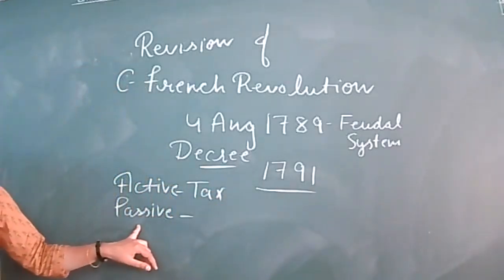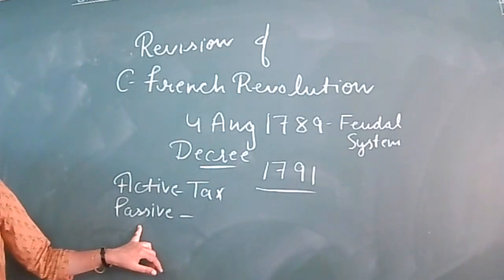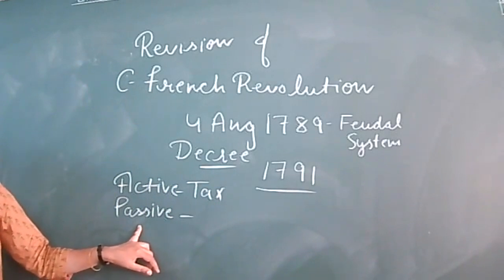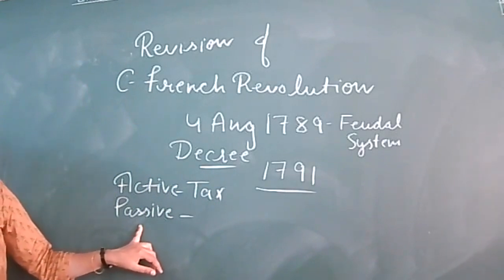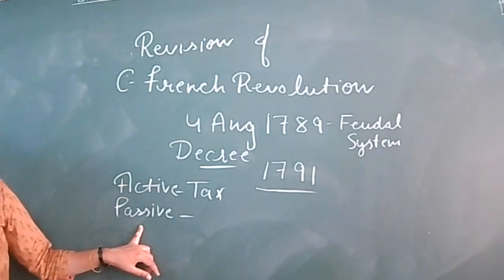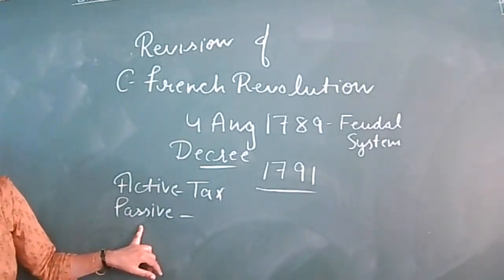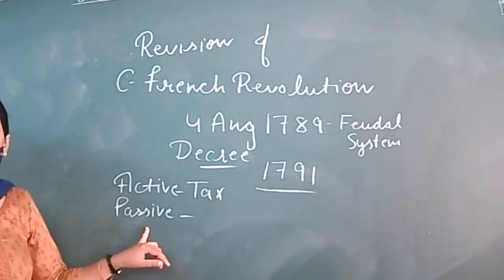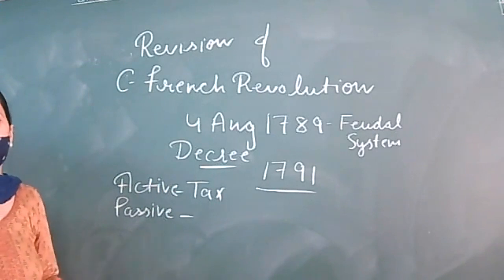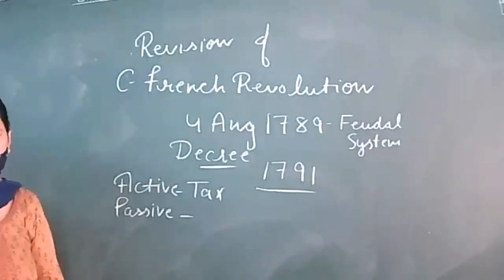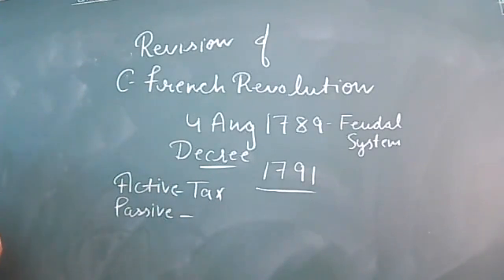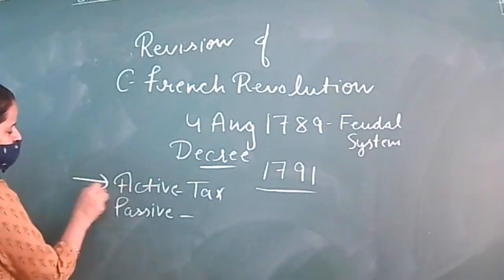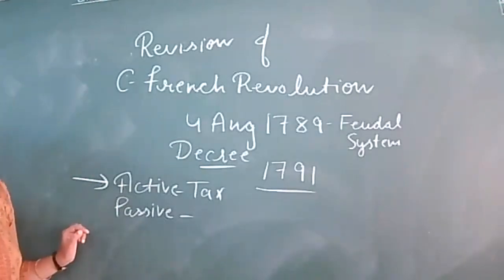Passive citizens are those below the age of 25, men who are not yet 25, and all women — even children. They also pay taxes. Now, who has voting rights? Active citizens.